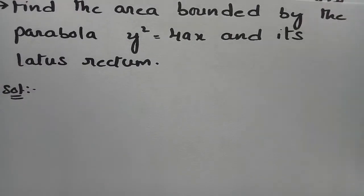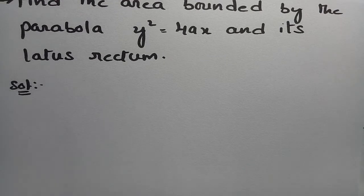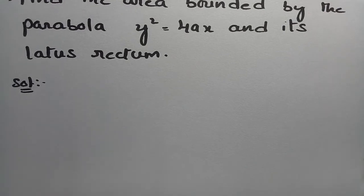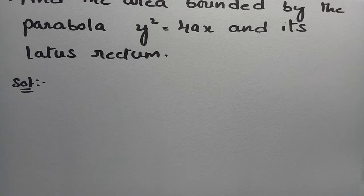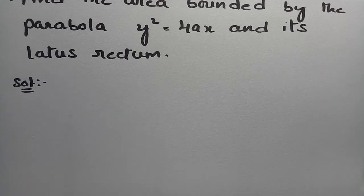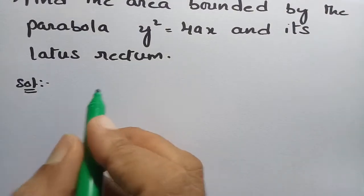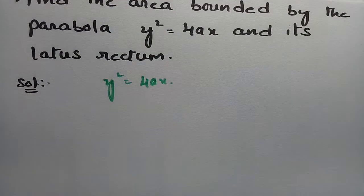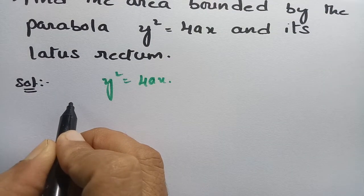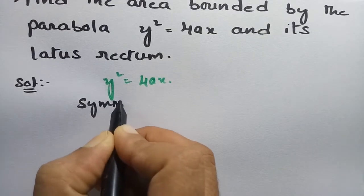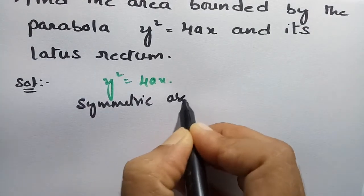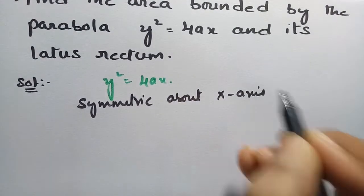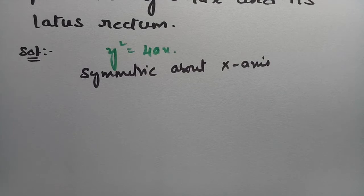The next problem is: find the area bounded by the parabola y² = 4x and its latus rectum. This is a parabola; we have to find the area of the parabola and its latus rectum. The equation of the parabola is y² = 4x, which is symmetric about the x-axis.